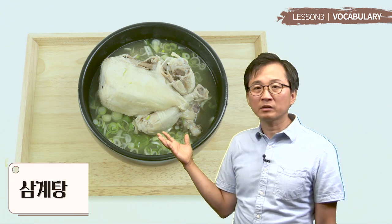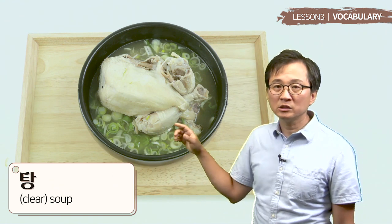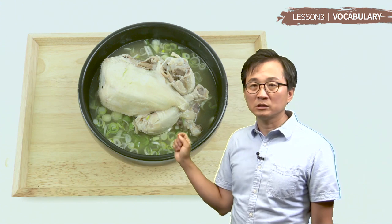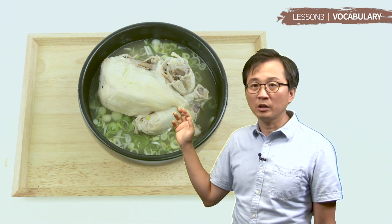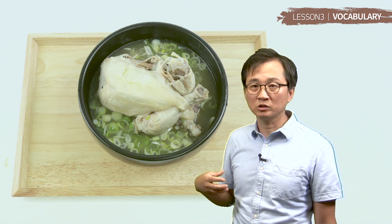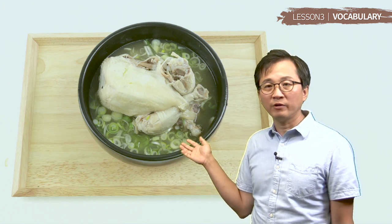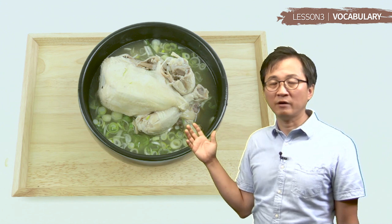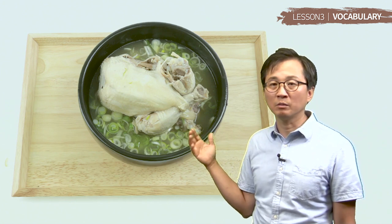그 다음에 삼계탕인데요. 탕 그러면 this type of soup를 탕으로 그러는데, you can see this whole chicken here. 여기도 파가 있고요. 그 다음에 people generally put 인삼, ginseng, inside of this chicken. You put sweet rice inside of the chicken as stuffing. 그 다음에 you boil it for a long time. It is also a famous summer food in Korea. You can have 삼계탕 any time of year, but people think they have to eat hot and nutritious food like 삼계탕 during the summer.